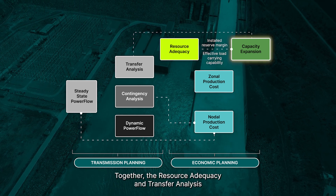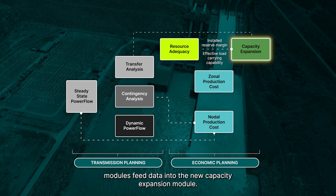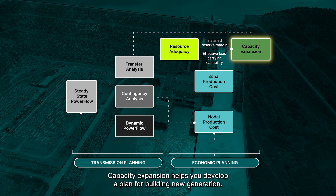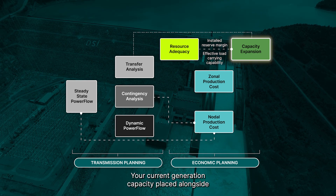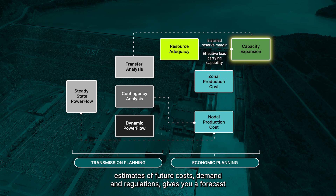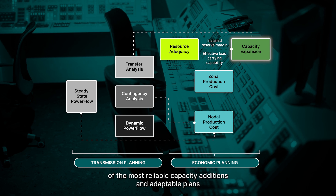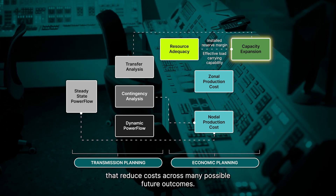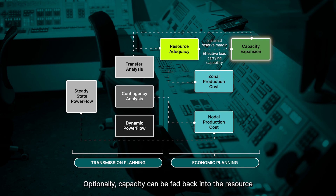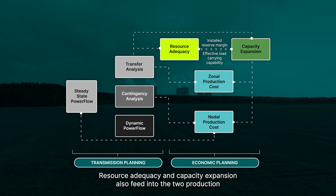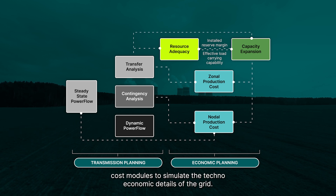Together, the Resource Adequacy and Transfer Analysis modules feed data into the new Capacity Expansion module. Capacity Expansion helps you develop a plan for building new generation. Your current generation capacity, placed alongside estimates of future costs, demand, and regulations, gives you a forecast of the most reliable capacity additions and adaptable plans that reduce costs across many possible future outcomes. Optionally, capacity can be fed back into the Resource Adequacy module to verify if it is a reliable plan. Resource Adequacy and Capacity Expansion also feed into the two Production Cost modules to simulate the techno-economic details of the grid.